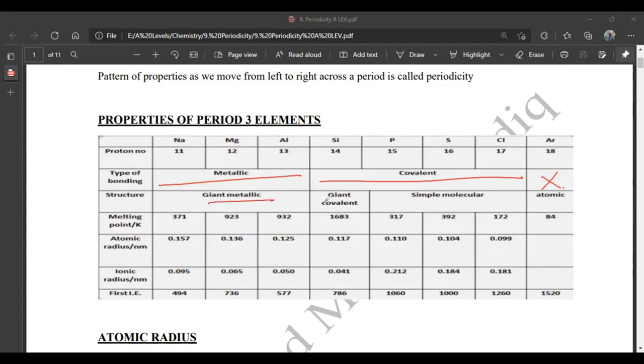It is a giant metallic structure. Silicon has a giant covalent structure. And phosphorus, sulfur, and chlorine are simple. And argon has an atomic structure.